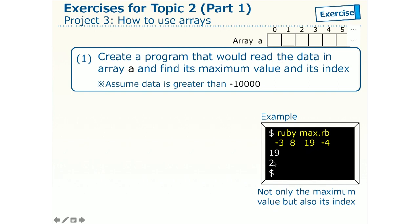Thus, the computer outputs 2 on the screen. This is the kind of the program we would like to create. We want not only to get the maximum value, but also its index. By the way, for simplifying our discussion, let us assume that the data to enter would be always greater than minus 10,000.